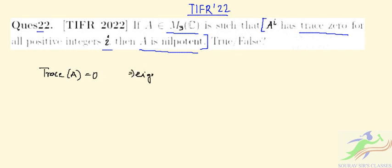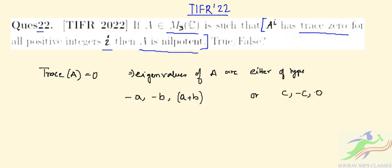The eigenvalues of A are either of type -a, -b, (a+b), or c, -c, 0, where a, b, c belong to the complex plane as stated.